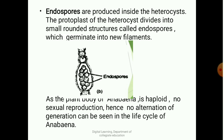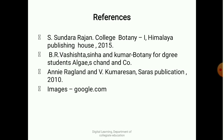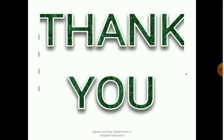As the plant body of Anabaena is haploid, no sexual reproduction is observed, and hence there is no alternation of generation seen in the life cycle of Anabaena. These are the references. Thank you for watching my presentation.